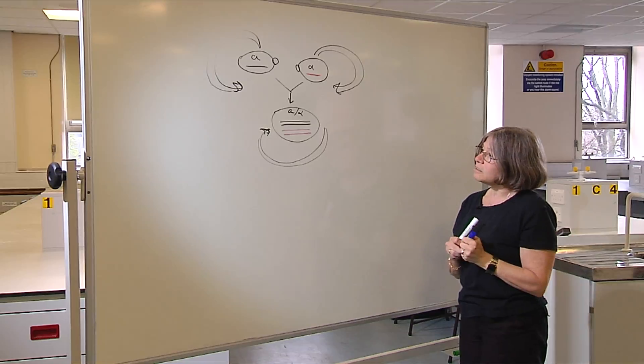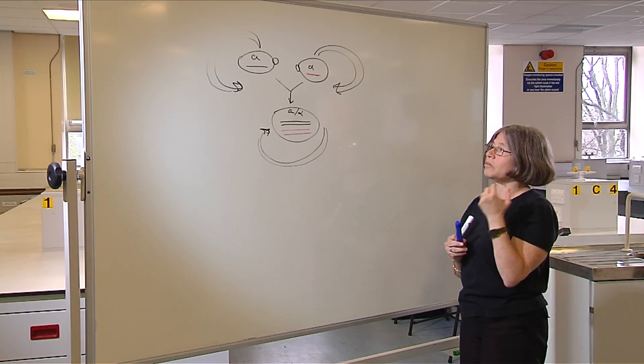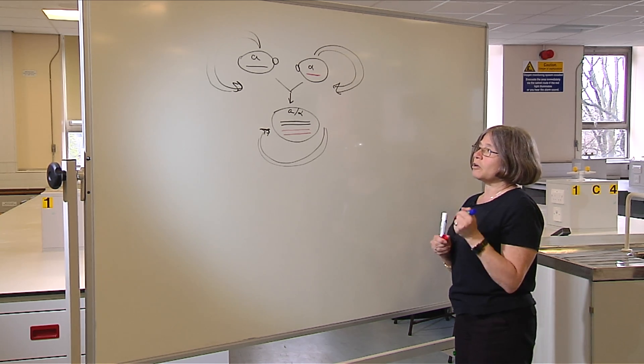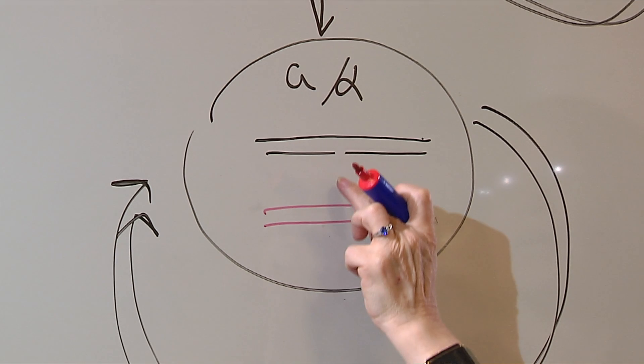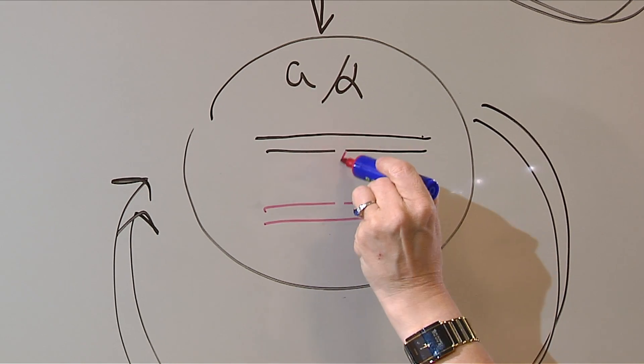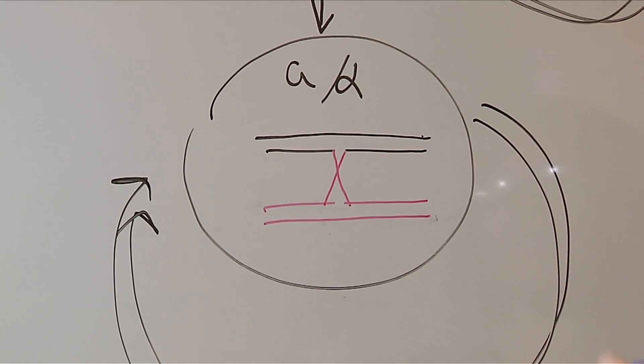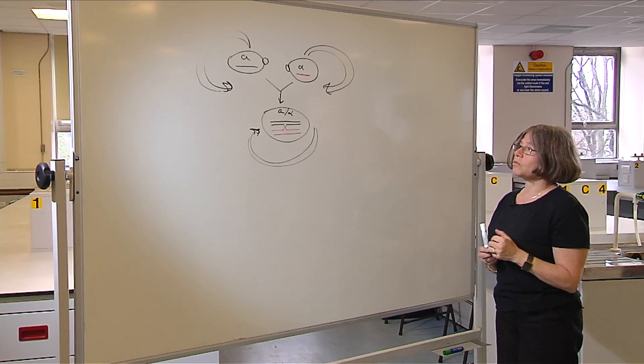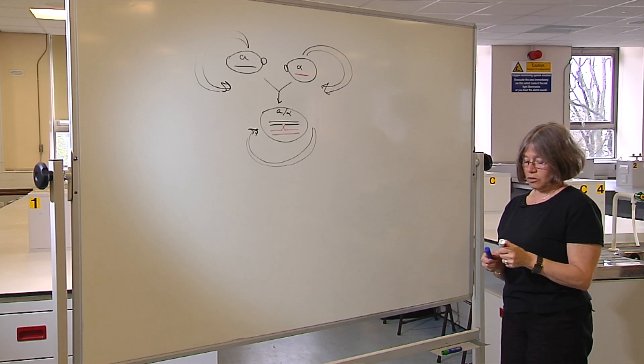The process that I study is actually how these chromosomes find each other and then recombine. Something called a crossover happens where genetic material is exchanged between the two chromosomes. And that's one of the reasons you never look exactly like your parents.